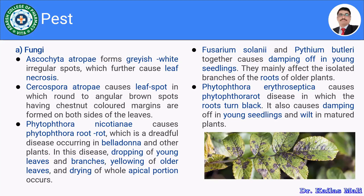Another example: Circospora atrophy causes a leaf spot in which round to angular brown spots having chestnut-colored margins are formed on both sides of the leaves, automatically leading to a decrease in efficiency of the particular product. Then Phytophthora nicotianae causes phytophthora root rot, which is a dreadful disease occurring in belladona and other plants.